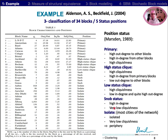The isolate, which represents most of the cities of the network, are very isolated and have very low cliquishness. They represent the periphery of the system.